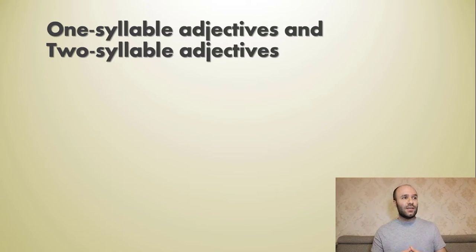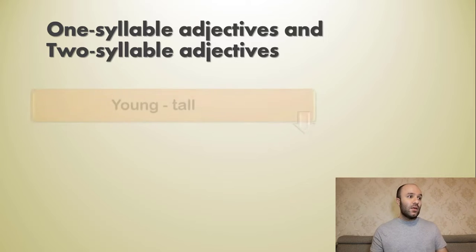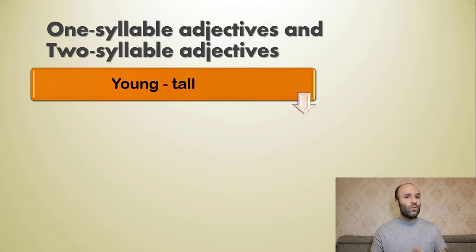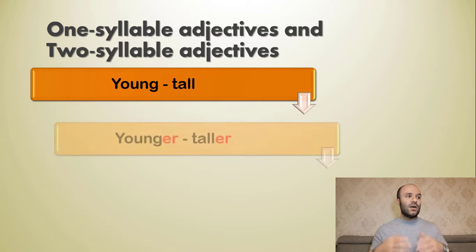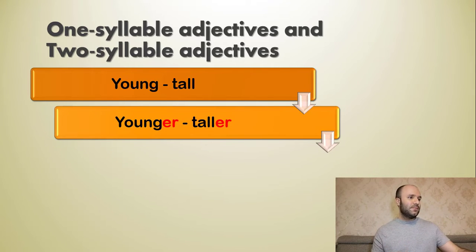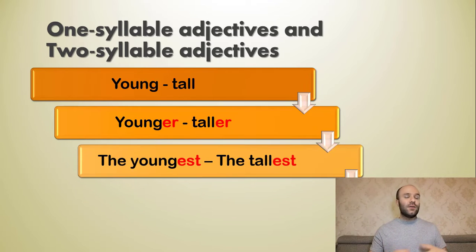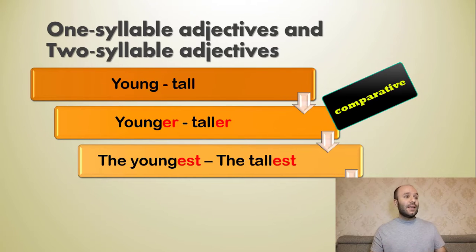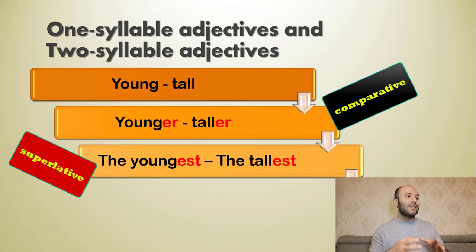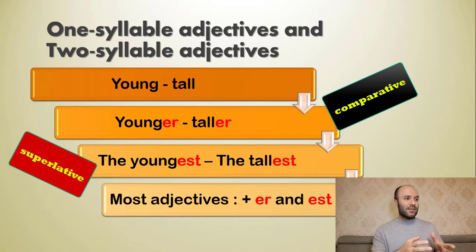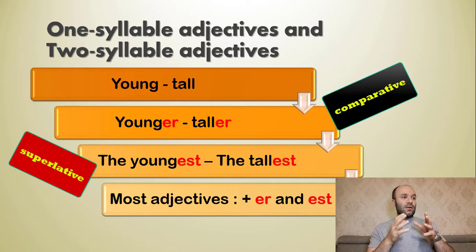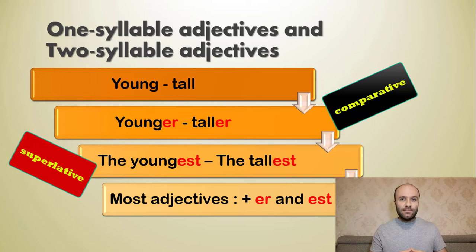For one-syllable adjectives like 'young' and 'tall': the comparative form is 'younger' and 'taller', and the superlative form is 'the youngest' and 'the tallest'. The rule is: for most adjectives like these, you add '-er' and '-est' at the end of the adjective.